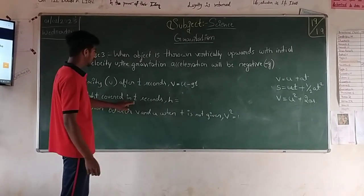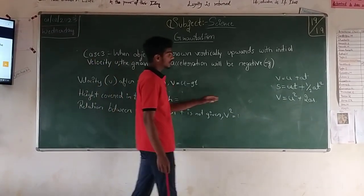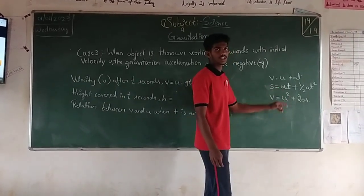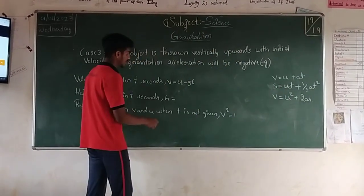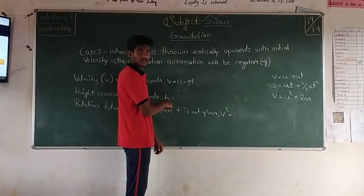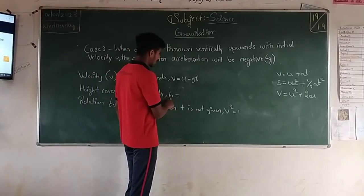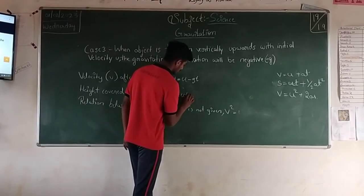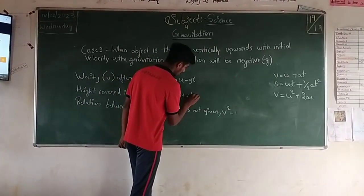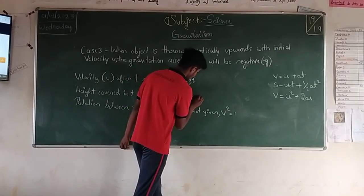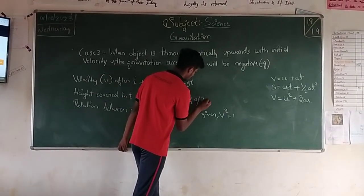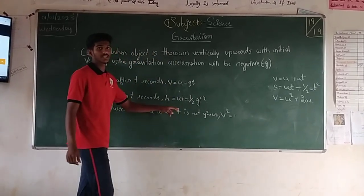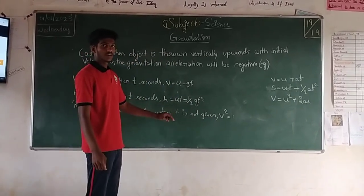Height covered in T seconds. In this expression, we use S equals UT plus half AT squared. In this expression, therefore we have taken H equals UT minus half GT squared. We have taken minus because it is against the gravity.